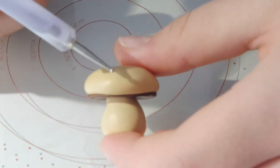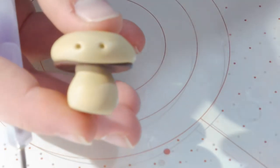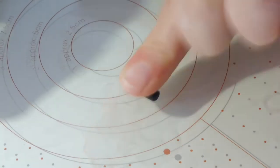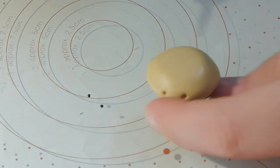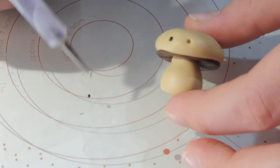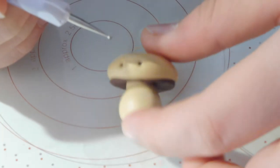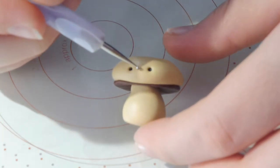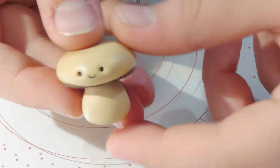And here I'm just adding the usual indents and I'm going to take my black clay and make the eyes and mouth and just pop them into place. And our little mushroom is ready to bake.